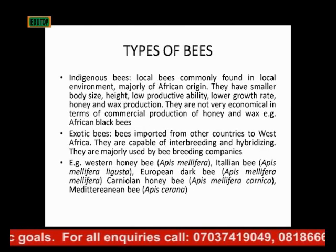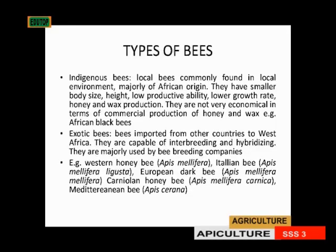There are two major types of bees: indigenous bees and exotic bees. Indigenous bees are the local bees commonly found in the local environment and are naturally of African origin. They have a smaller body size, smaller hive, and low productive ability. They have lower growth rates compared to exotic bees and also have low honey and wax production, making them not very economical for commercial production. An example is the African black bee.